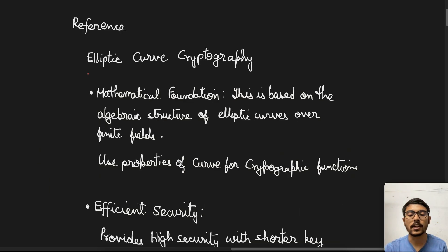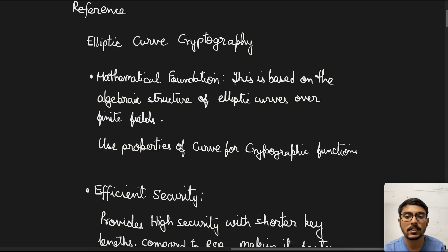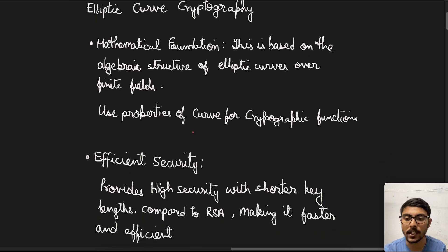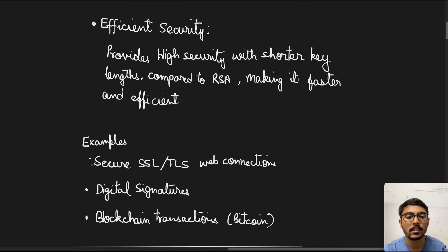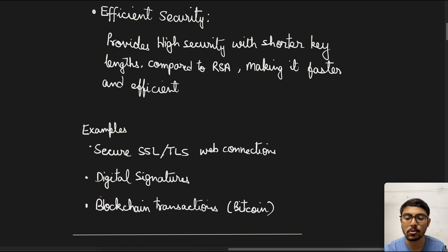Elliptic curve cryptography is an encryption algorithm. Its mathematical foundation is based on the algebraic structure of elliptic curves over finite fields, using the properties of elliptic curves for cryptographic functions like encrypting and decrypting. ECC provides high security with shorter key lengths compared to RSA, making it faster and more efficient. Examples include secure SSL/TLS web connections, digital signatures for certification and authentication, and blockchain transactions such as Bitcoin.